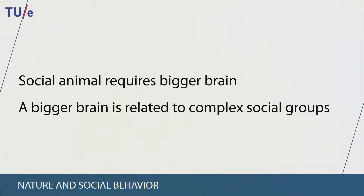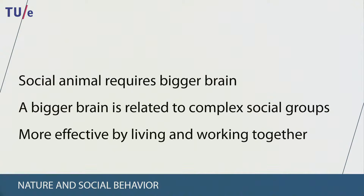Having bigger brains relative to our body size is correlated with having larger and more complex social groups. Having social lives means that we tend to live and work together, which in turn allows us to be more effective. To understand how this works, we need to turn to culture and human social life.